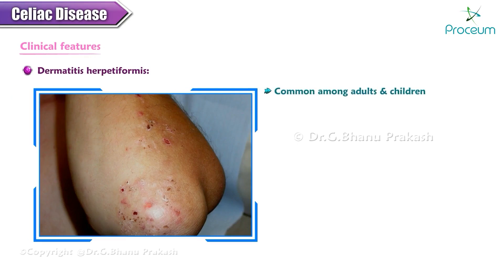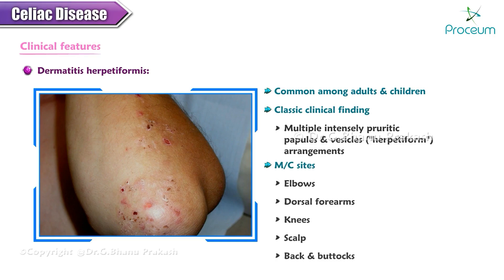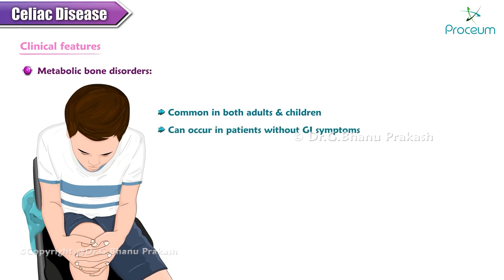Dermatitis herpetiformis is common among adults and children with celiac disease. The classic clinical finding is the development of multiple intensely pruritic papules and vesicles in grouped herpetiform arrangements, most commonly on the elbows, dorsal forearms, knees, scalp, back, and buttocks. Metabolic bone disease is also common in celiac disease in both adults and children and can occur in patients without gastrointestinal symptoms. Patients may have bone loss due to secondary hyperparathyroidism from vitamin D deficiency.